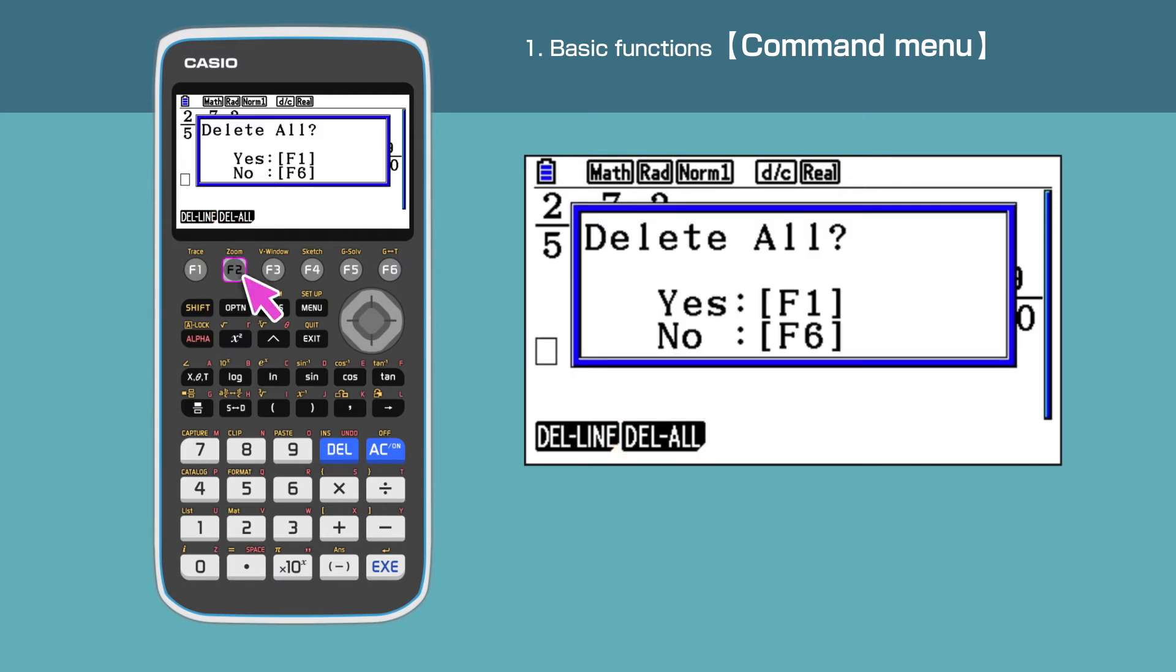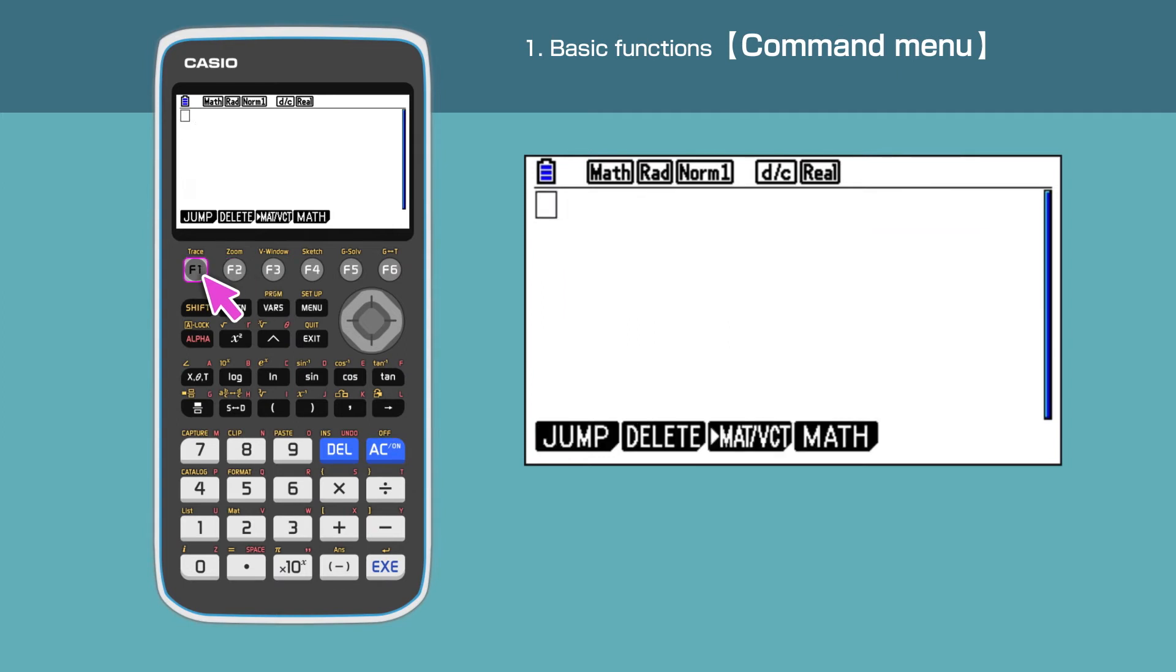The display is cleared. The next basic instruction we want to show you is how to select keys represented in different colors. On the CZ50, most keys perform several functions and each function is linked to a color.